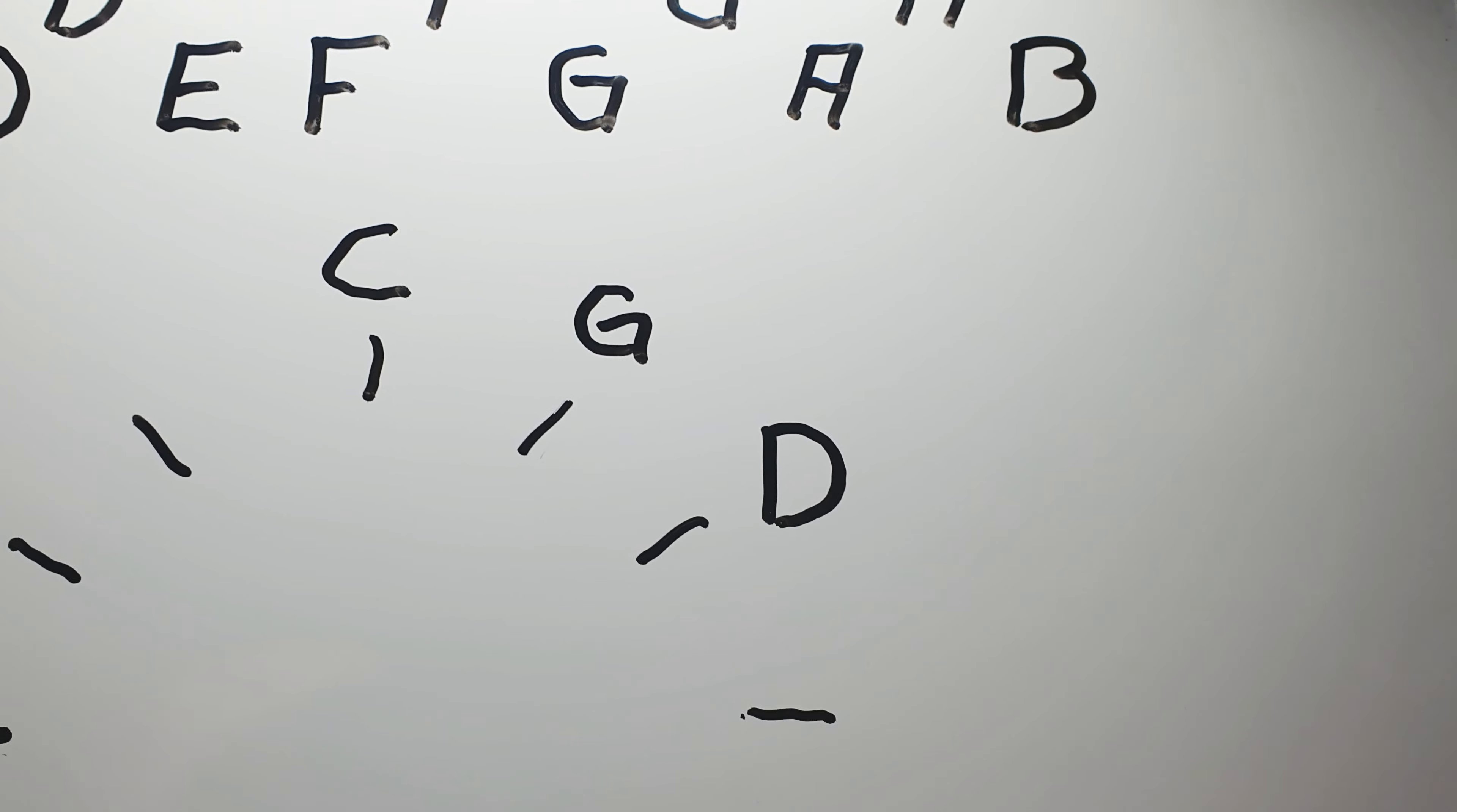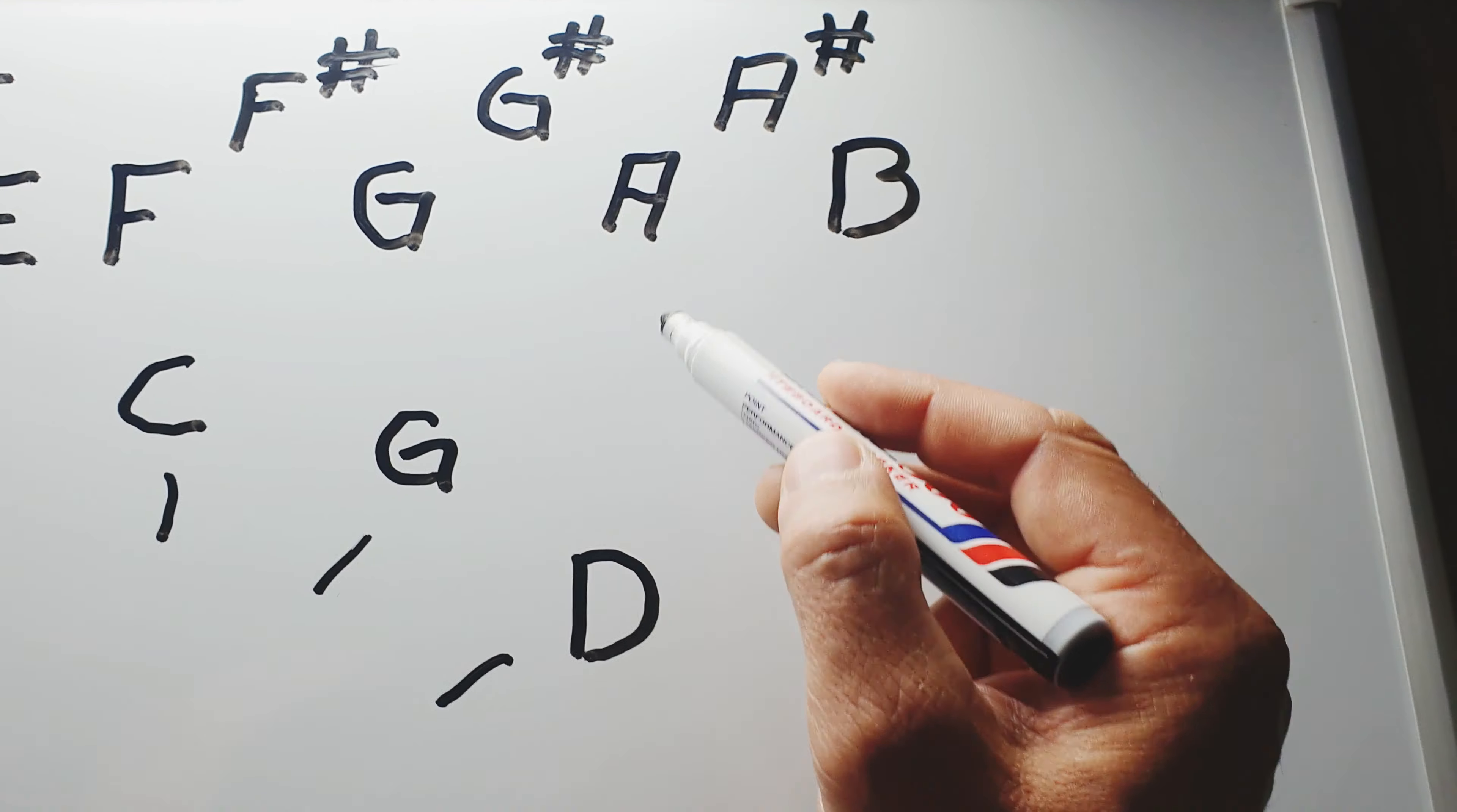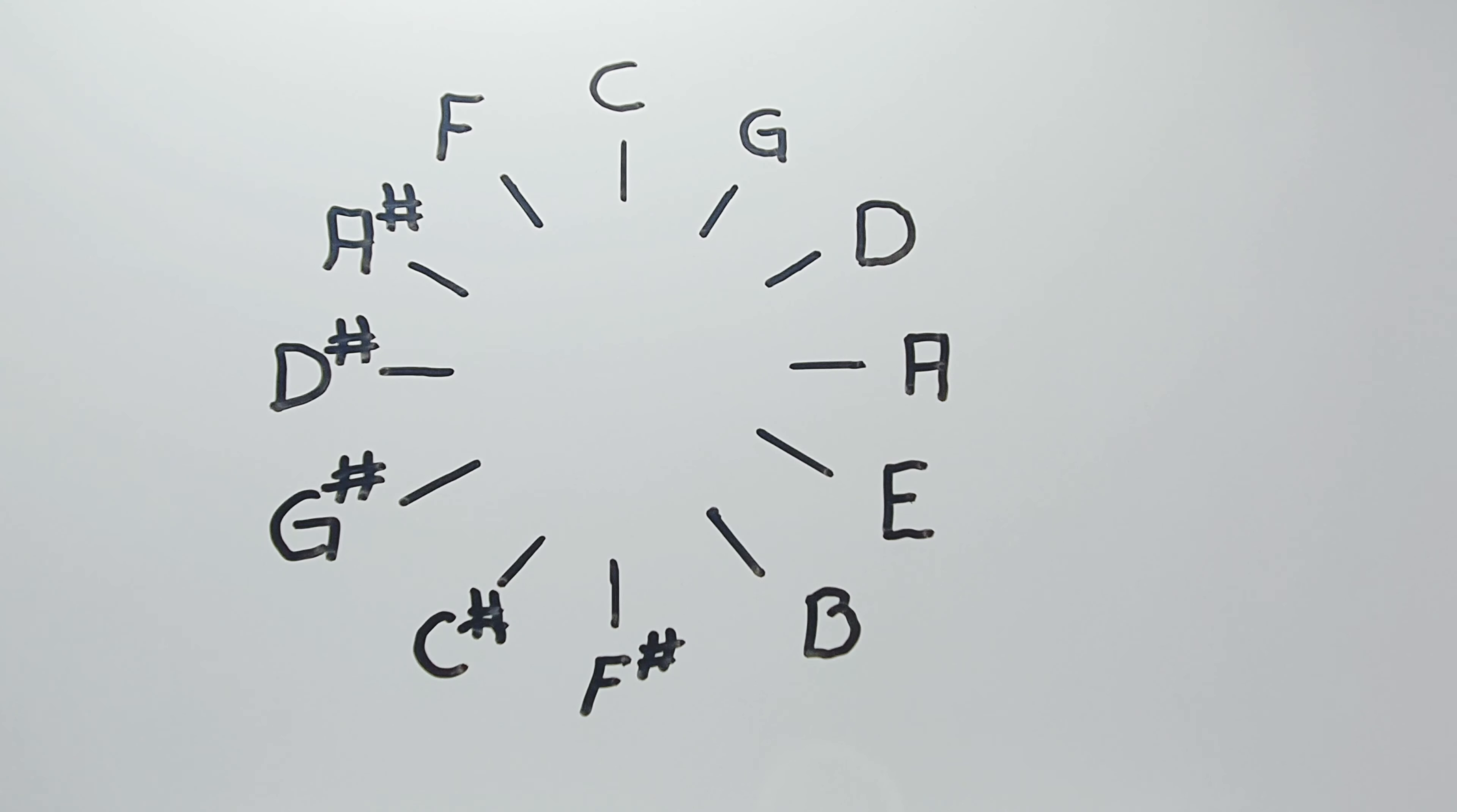And let's continue finding the fifth to the D: 1, 2, 3, 4, 5, 6, 7. An A. And I'll put that on three o'clock. And continue like that and you will have this circle.